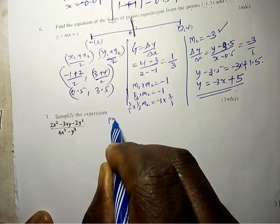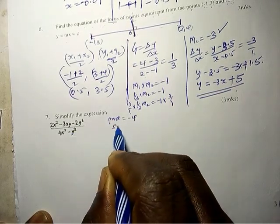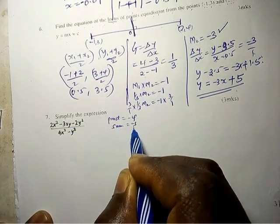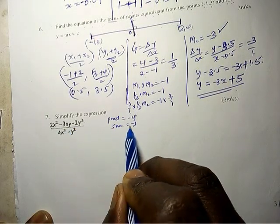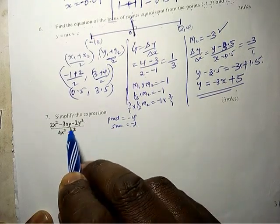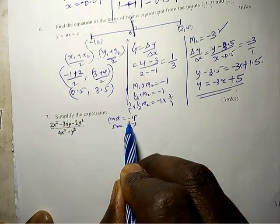The product equals negative 4 and the sum is negative 3, so we look for two numbers. When we add them the answer is negative 3. When we multiply them, the answer is negative 4.